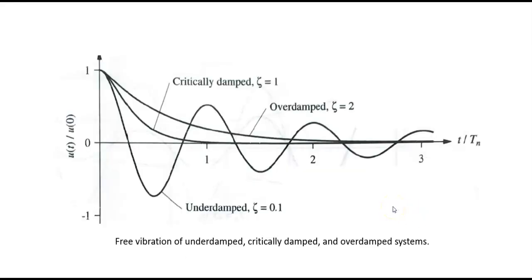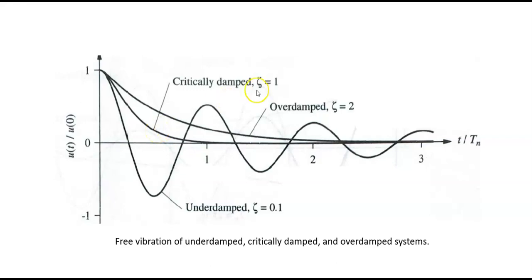First, let me briefly talk about under damped, over damped, and critically damped systems. This plot shows displacement against time. If the system is initially displaced — this point shows the initial displacement — and zero is the equilibrium position, then if the system is critically damped, it would return to its equilibrium position with no oscillation, and the damping coefficient is equal to 1.